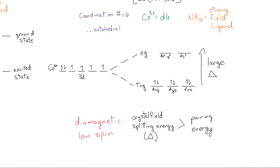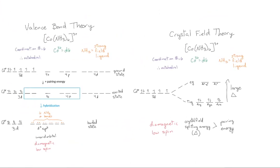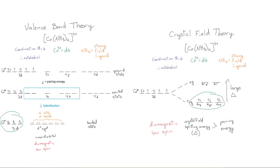So, let's compare the two diagrams. Surprisingly, we learned the same thing from both diagrams. Both showed that CONH3 6 is diamagnetic with a low spin. Most importantly, they match in our T2G from the crystal field theory and the 3D from the valence bond theory.